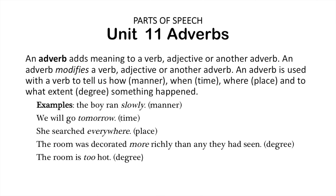An adverb adds meaning to a verb, adjective or another adverb. An adverb modifies a verb, adjective or another adverb. An adverb is used with a verb to tell us how, when, where and to what extent something happened. We often look at these in terms of manner, time, place and degree, and we'll see examples down here.